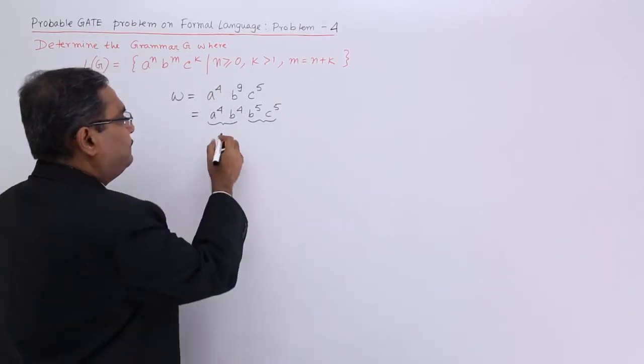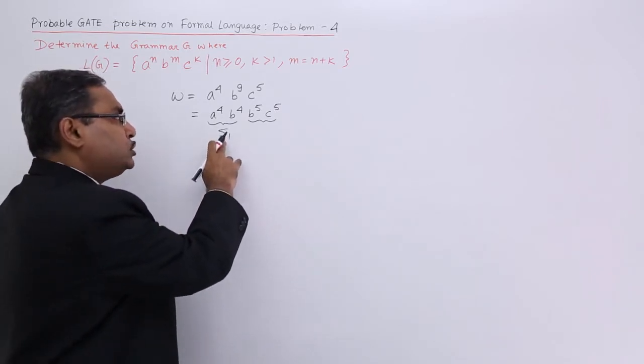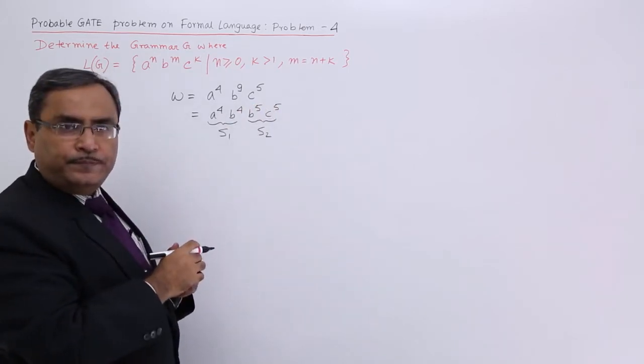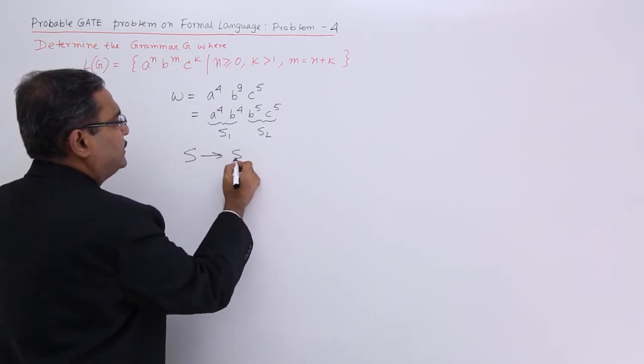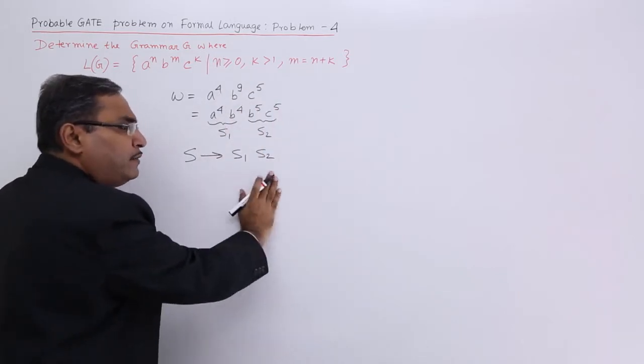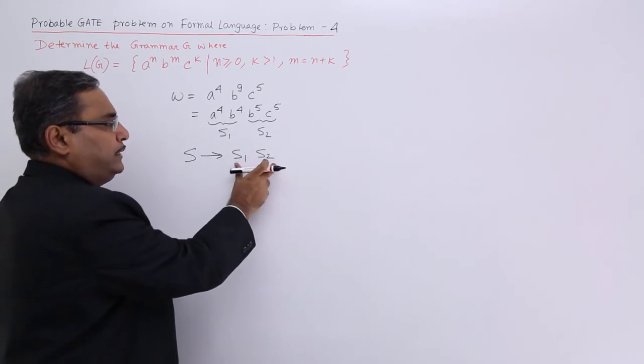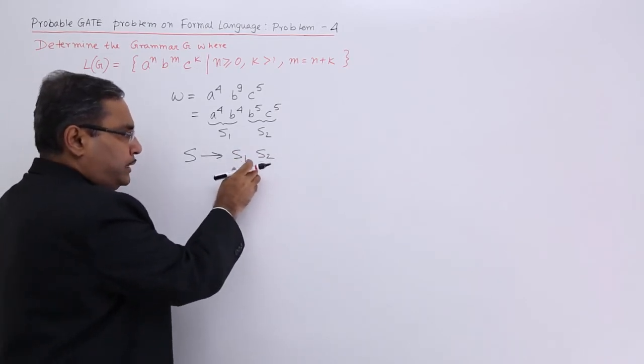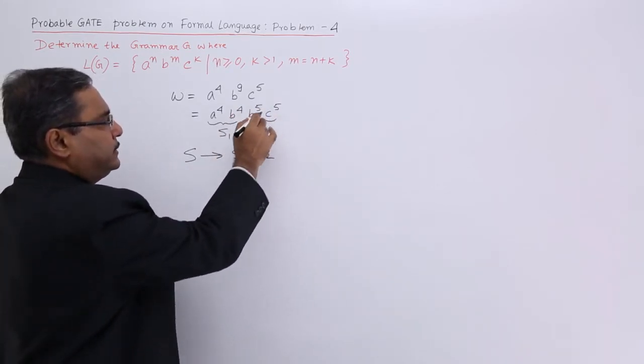Let us suppose, I shall bring one s1, non-terminal s1, which will be responsible to form this, and another s2, which will be responsible to form this. Let me write the production. S produces s1 and s2. Please look at our planning and we will be writing the production rules accordingly. So s produces s1 and s2 in this way. They will get concatenated, whatever the strings s1 is producing, whatever the strings s2 will be producing, they will get concatenated like this.